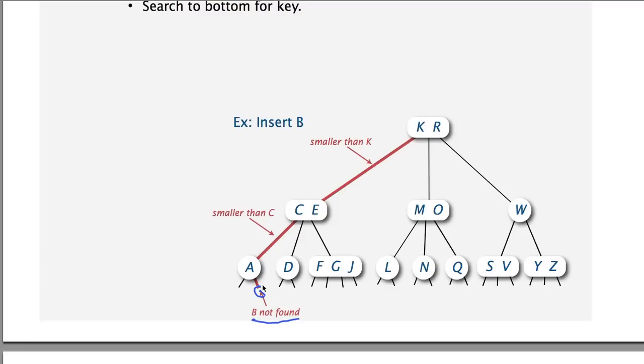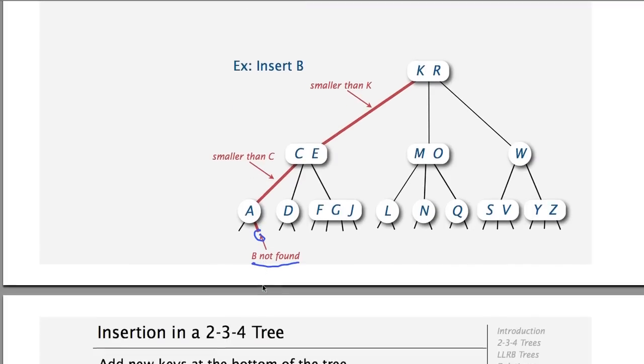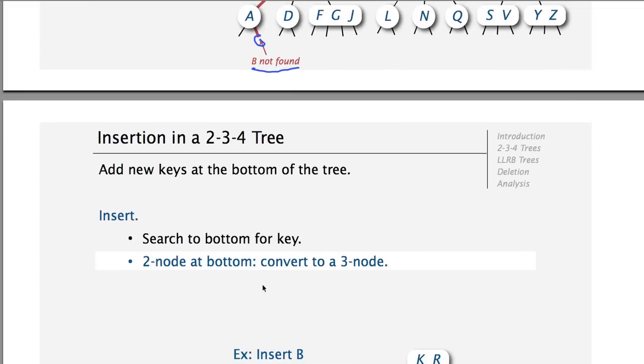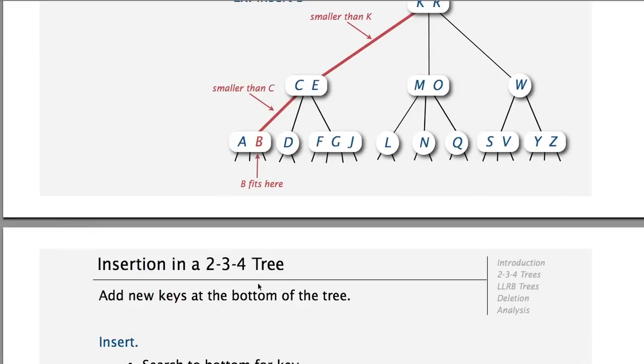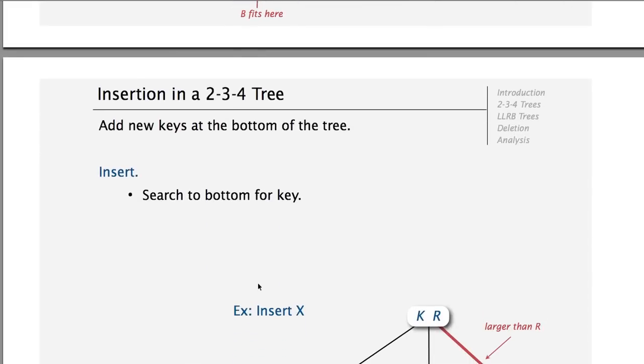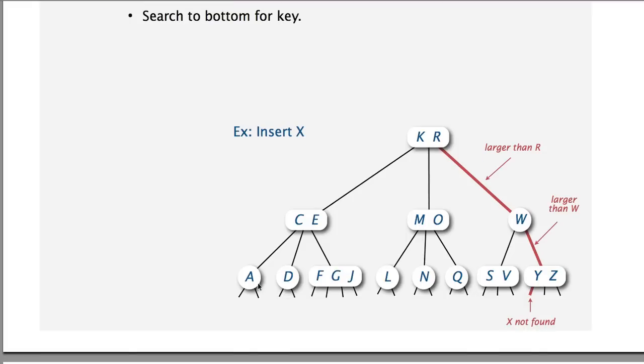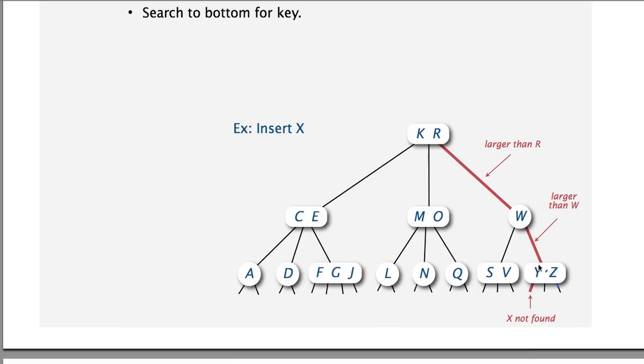So if the node that we reach, the base node, is single or two, then it's simple to add our node there. So a 2-node at the bottom, we convert to a 3. So we add the B right after this. Similarly, if we go with X and we reach an end node that is a 3-node, so it has two keys, we can still add the X.